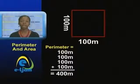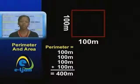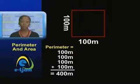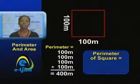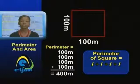We can use our calculation to derive a formula for the perimeter of any square. Since the length of all the sides are the same, we can represent the length of one side using the letter L. Therefore, four equal sides suggests that the perimeter would be equal to L plus L plus L plus L, which is 4L.